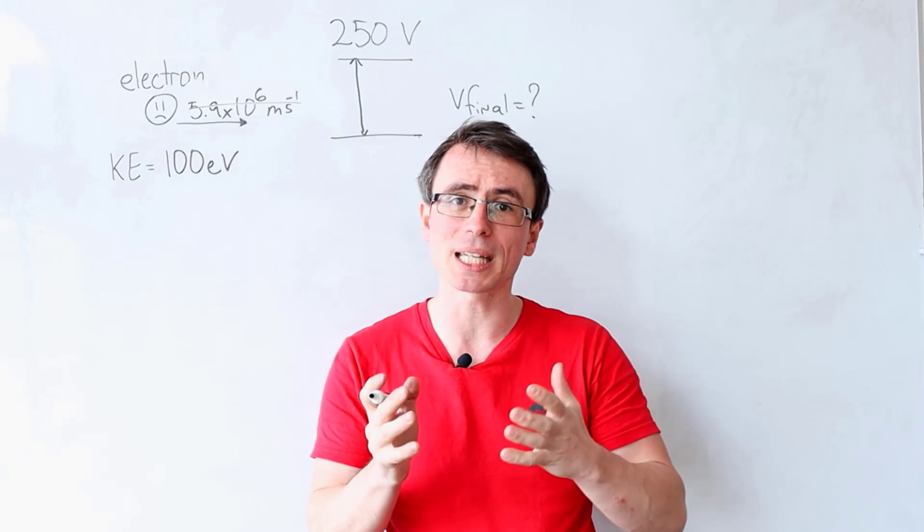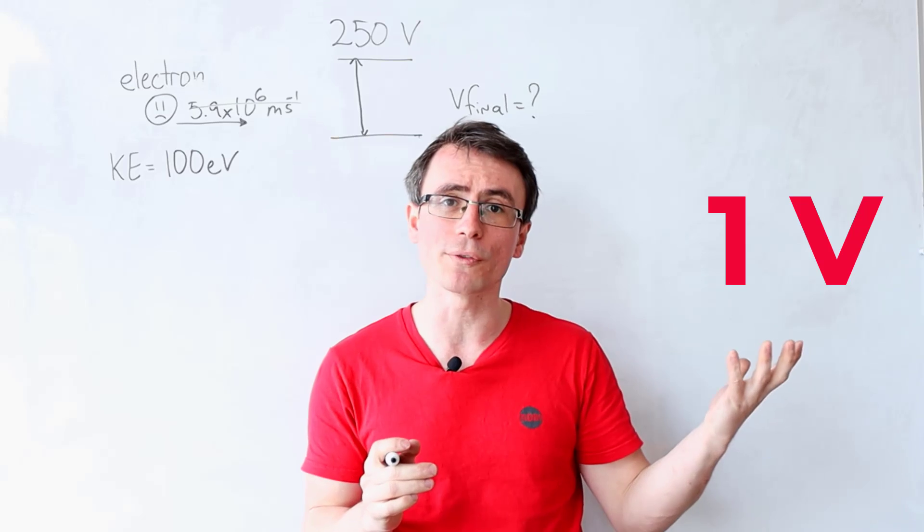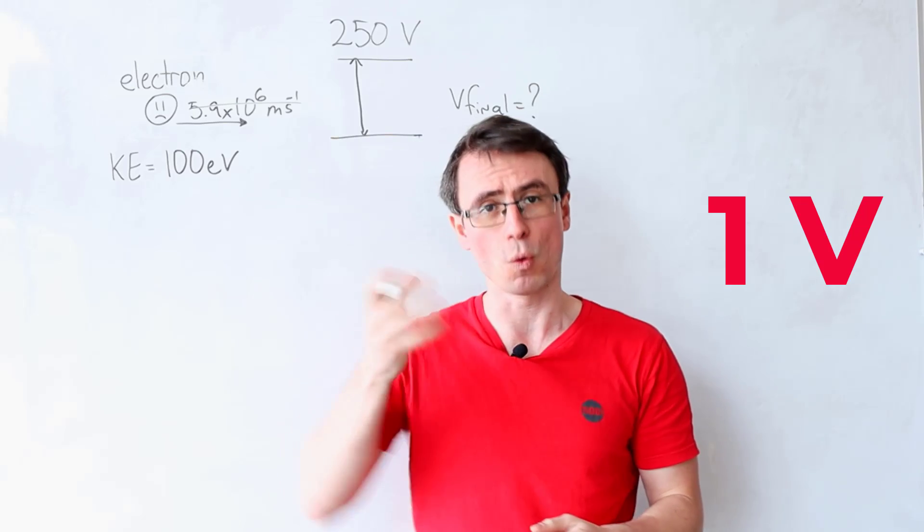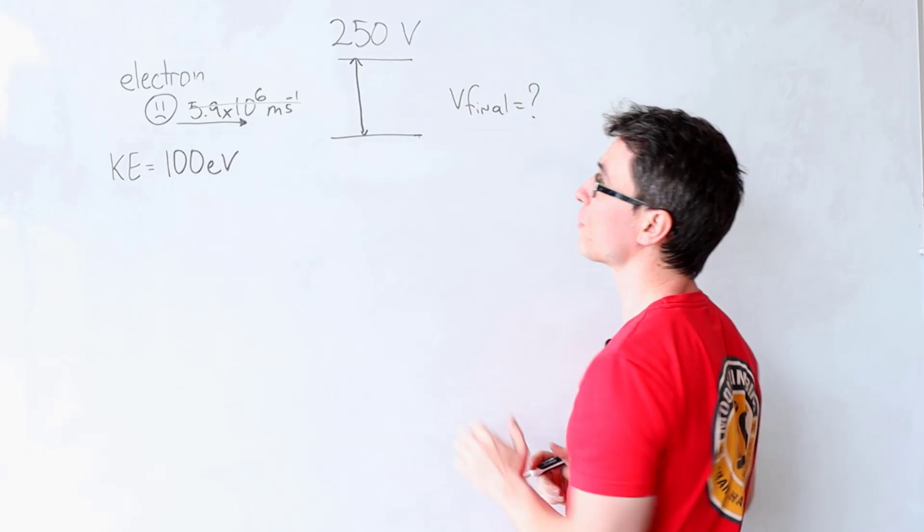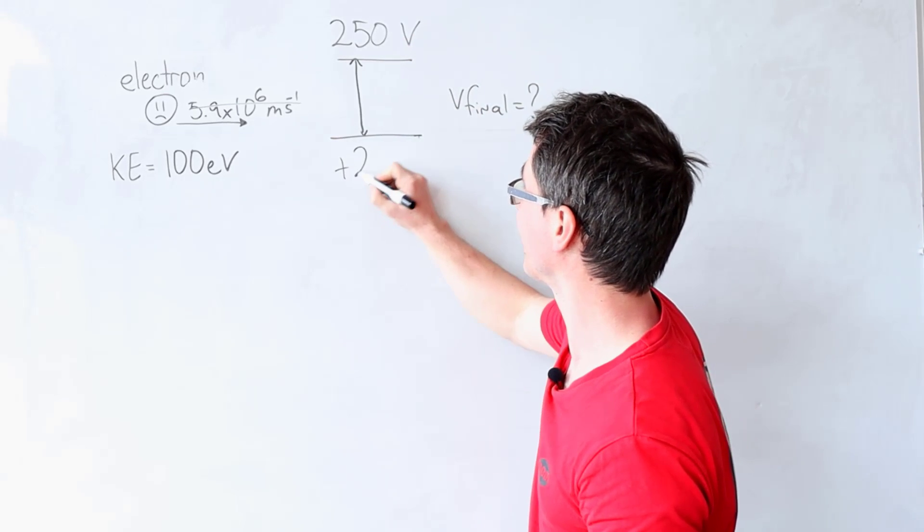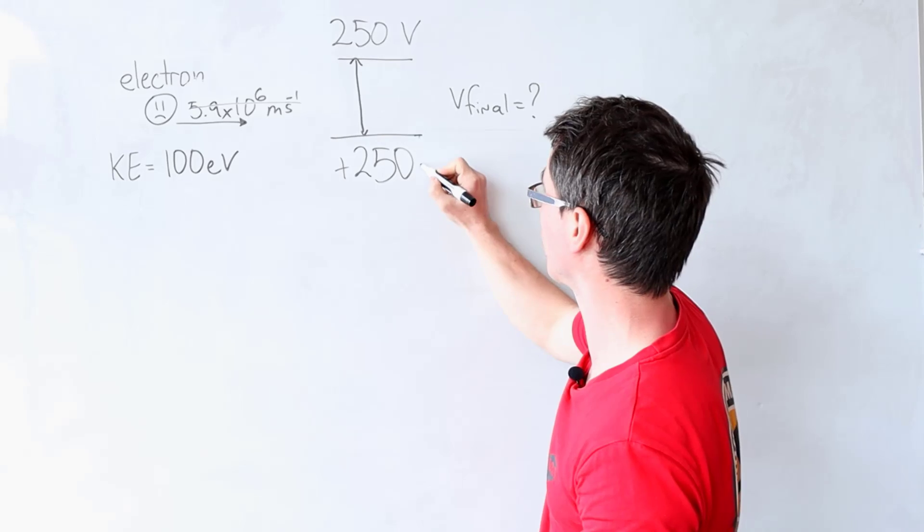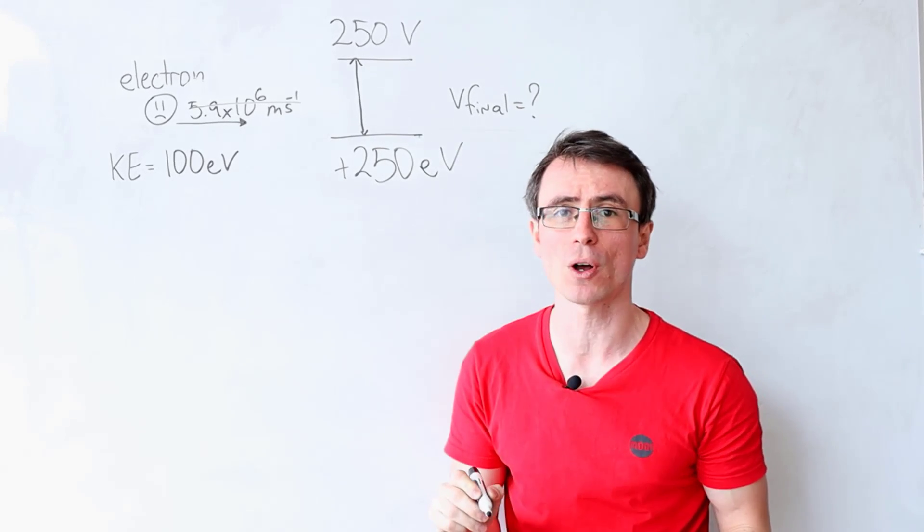If an electron is accelerated by a potential difference of 1 volt, it will acquire 1 electron volt. If it's accelerated by 250 volts, it will acquire an extra 250 electron volts.